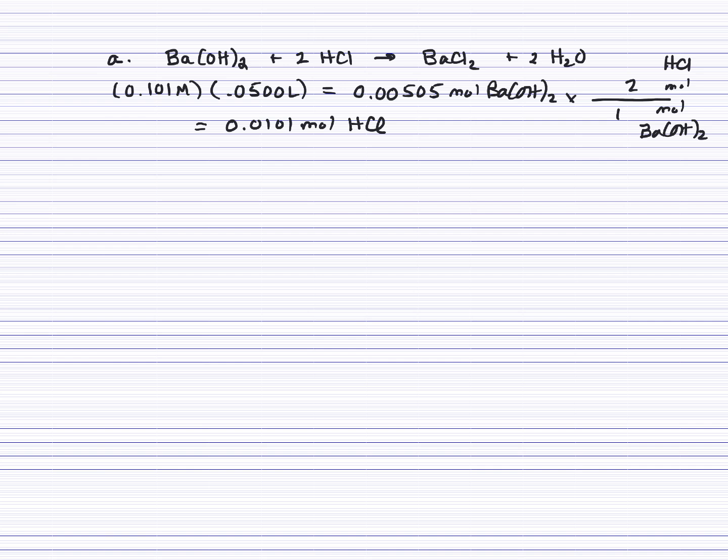So that's going to give us 0.0101 moles of HCl. Since molarity is moles over liters, liters is moles over molarity. So we'll take our moles and divide by our molarity, which is 0.12 molar. And that will give us 0.0842 liters. So if we multiply by 1,000 milliliters per liter, we'll see that we need 84.2 milliliters.